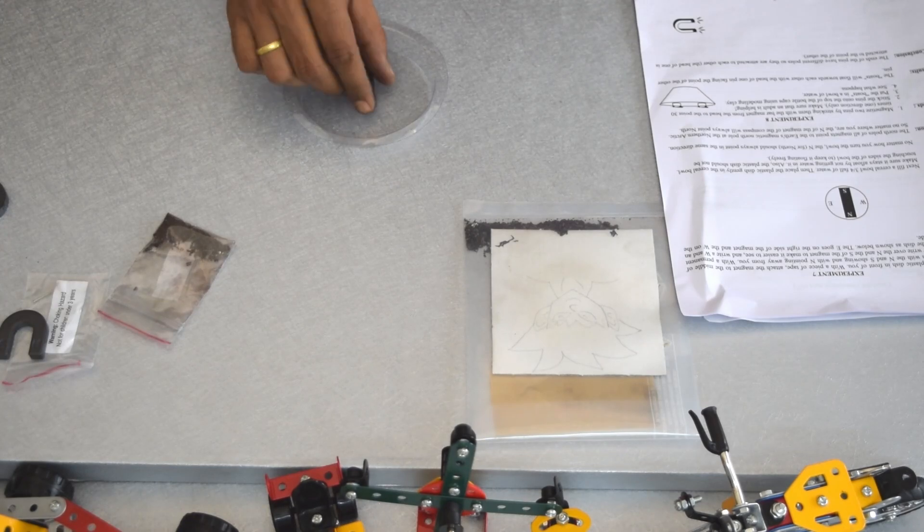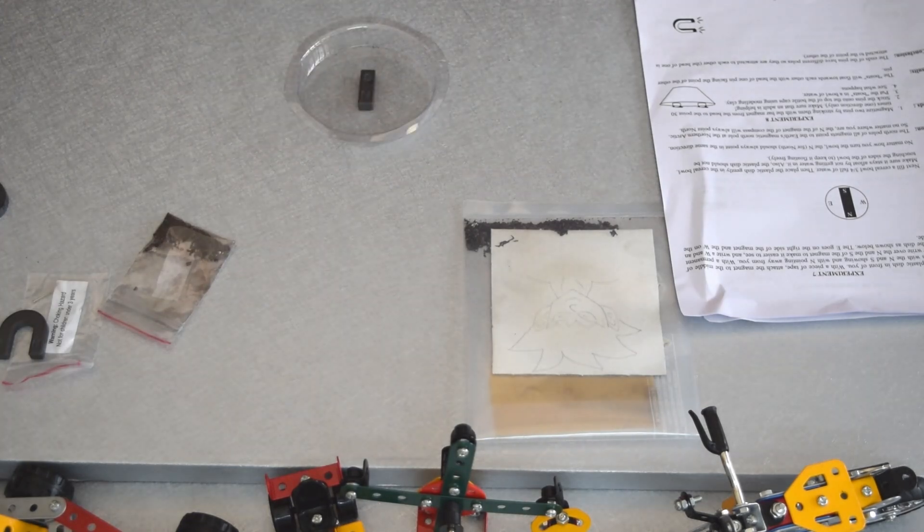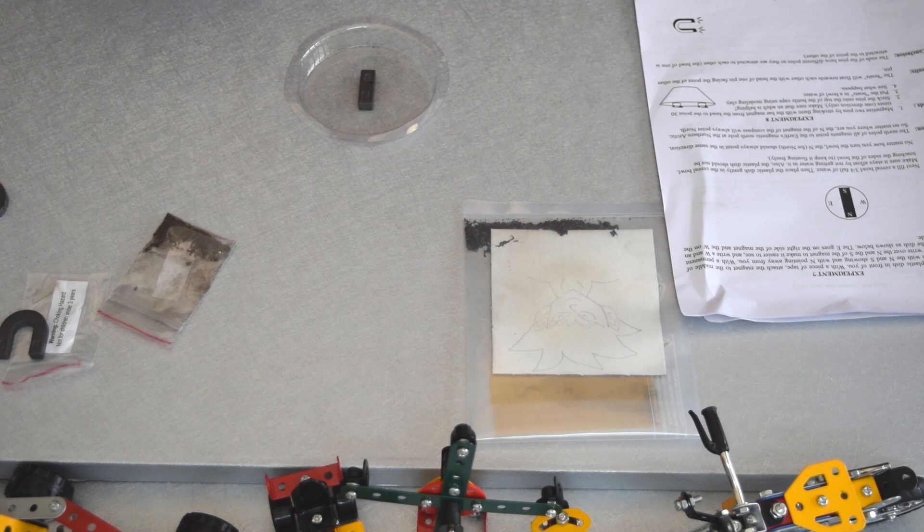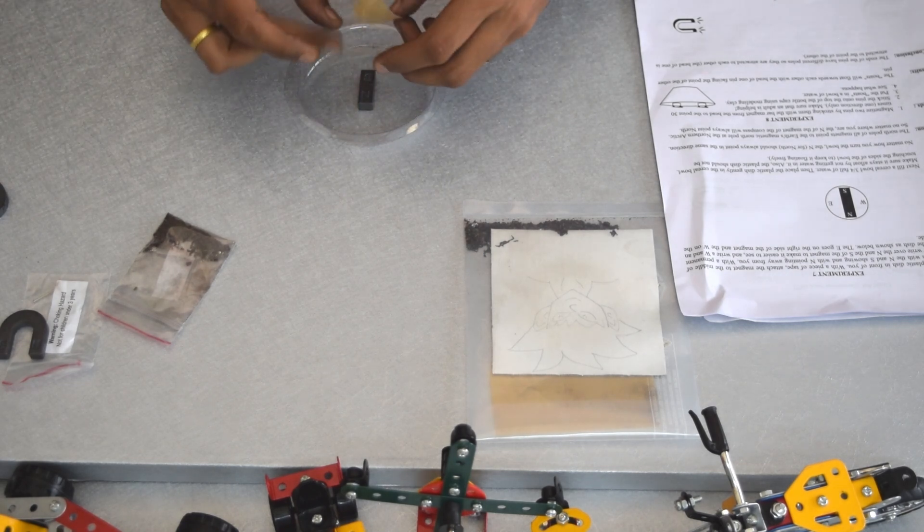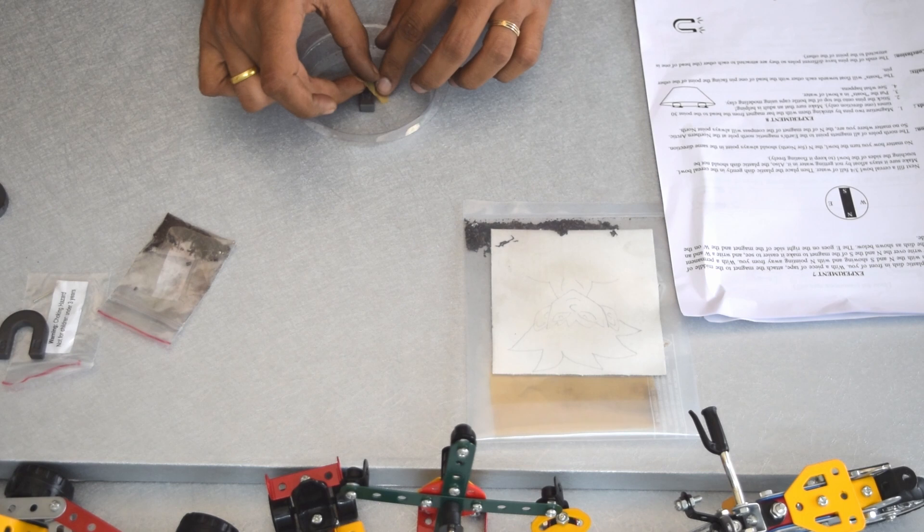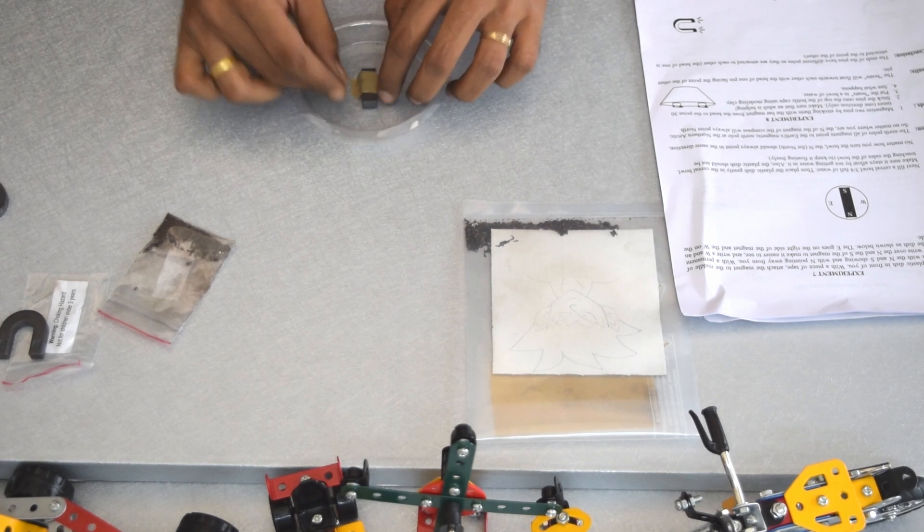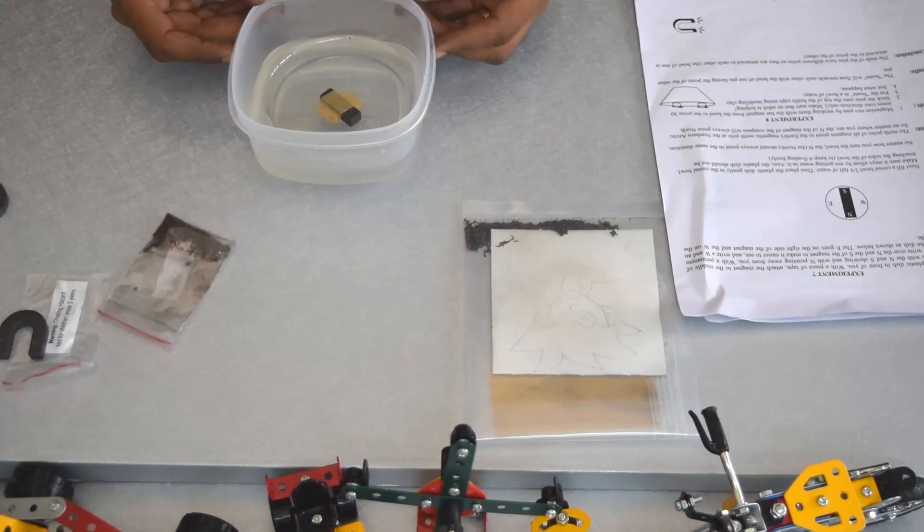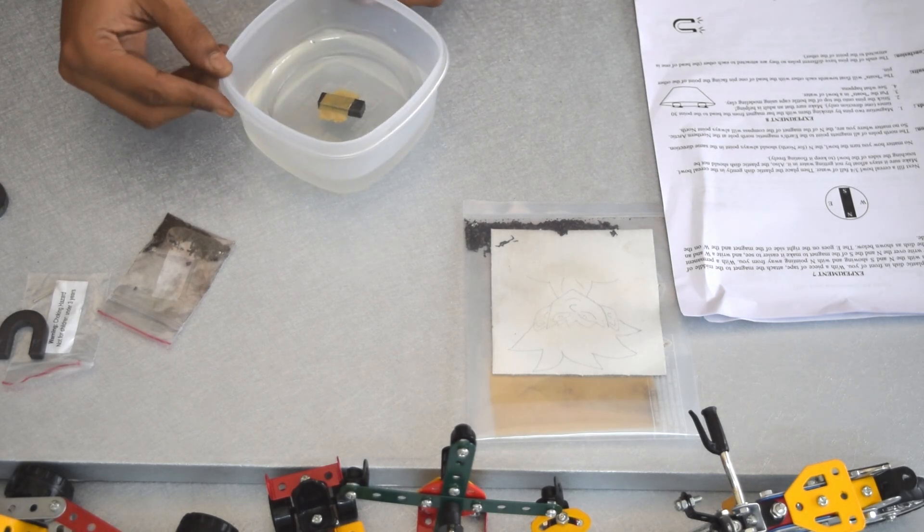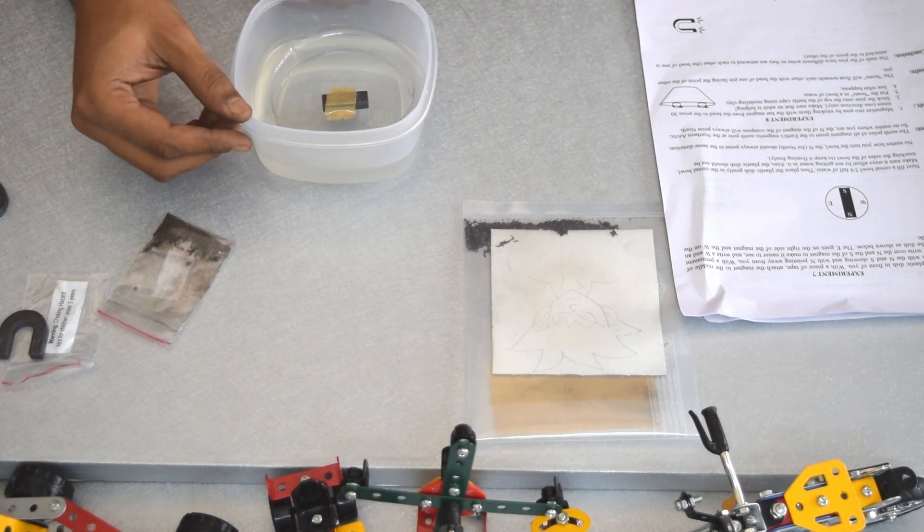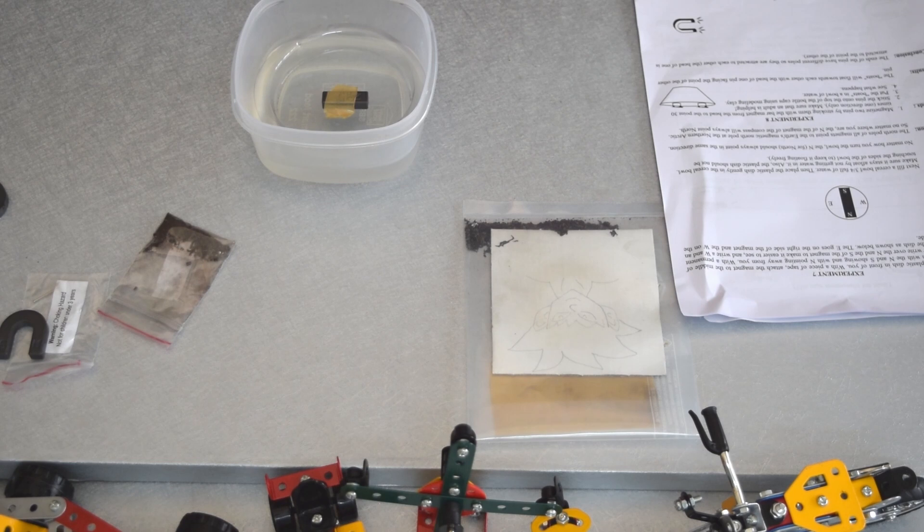Now we are going to use this bar magnet for the experiment. We are attaching the magnet to the middle of the dish. Let me shift this. Let's try even in this small bowl. Does it shift the poles?